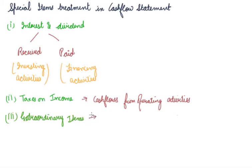The third special item is extraordinary items. Cash flows relating to extraordinary items — such as bad debts received, insurance claims received, or lottery winnings — should be disclosed separately as arising from operating, investing, or financing activities. For example, if you received an insurance amount for inventory lost to fire or earthquake, it would be treated under operating activities. It depends on the type of extraordinary item and where it originates.